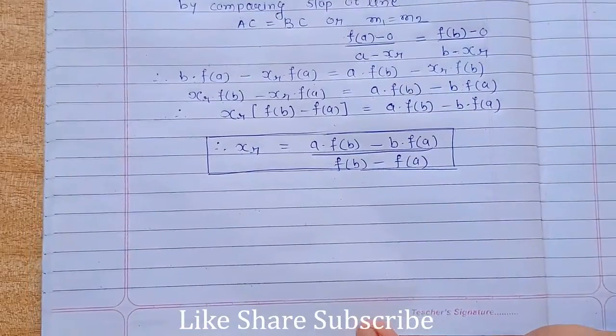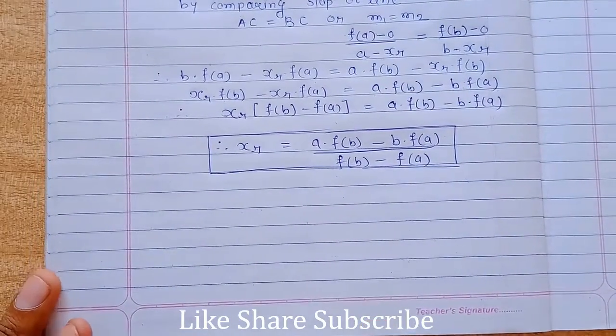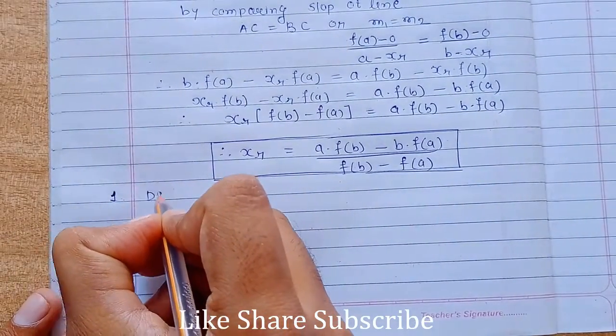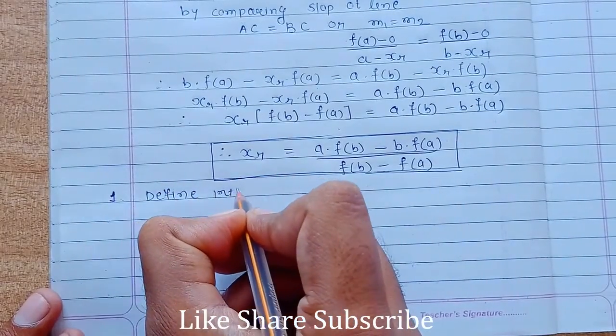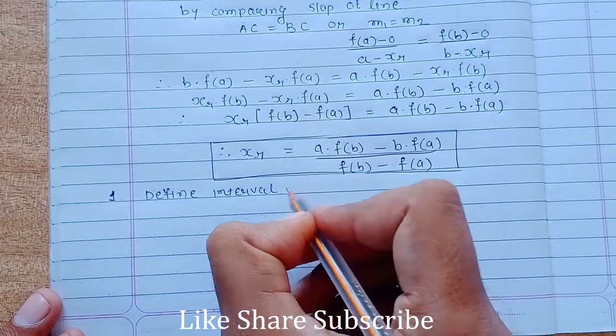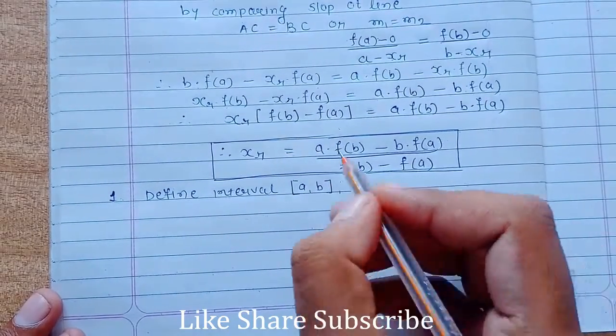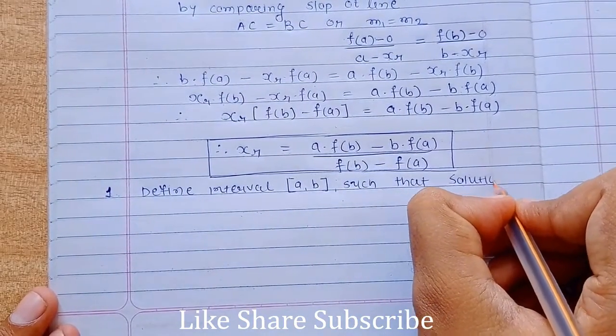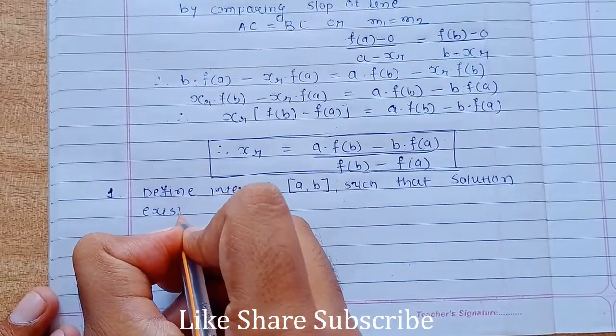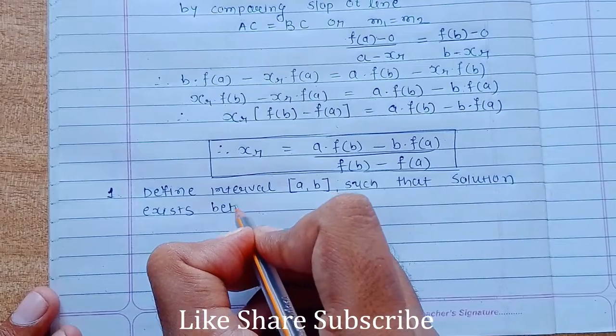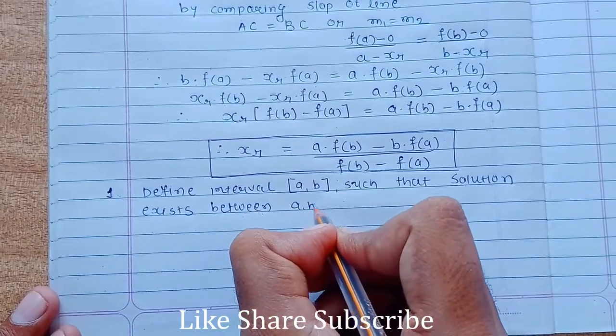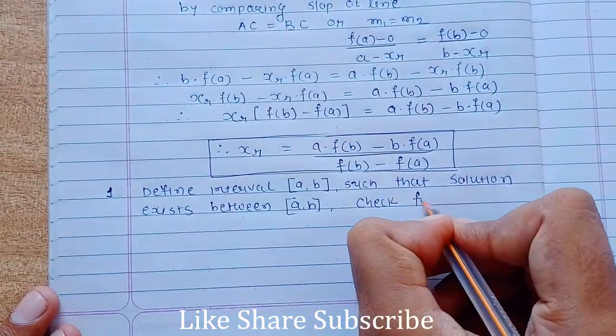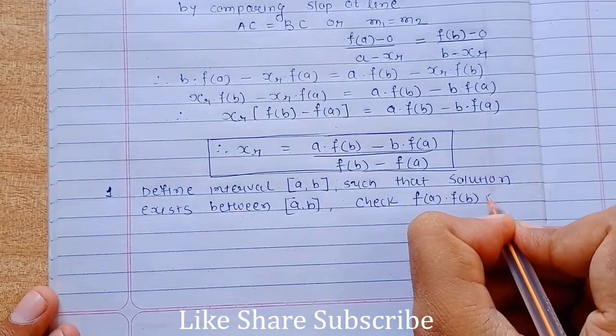Now let's talk about the algorithm, how to solve the problem using regula falsi method. First step: define interval a, b such that solution exists between a and b. Check f of a into f of b is less than 0. Then compute